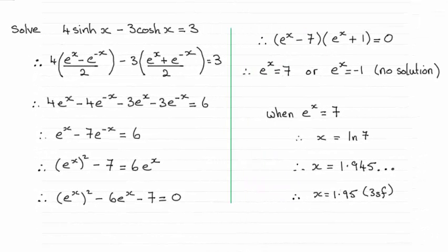Hi there. Now for this question, you're asked to solve 4 sinh x minus 3 cosh x equals 3.